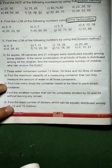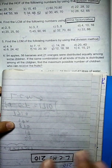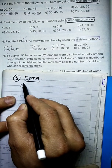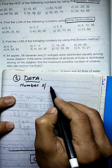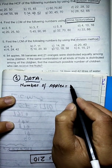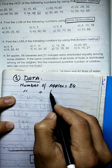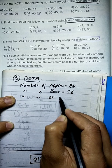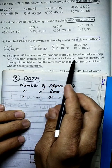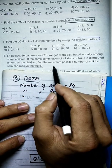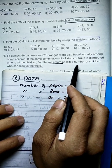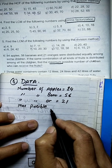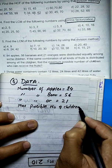Question number 6 data: we need to find the number. The number of apples is 84, number of bananas is 56, number of oranges is 21. We need to find the maximum possible number of children among whom the fruits can be distributed equally.